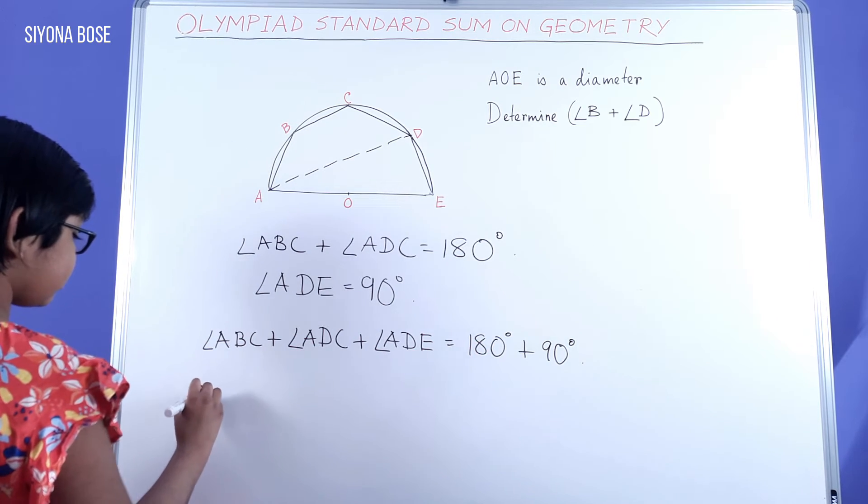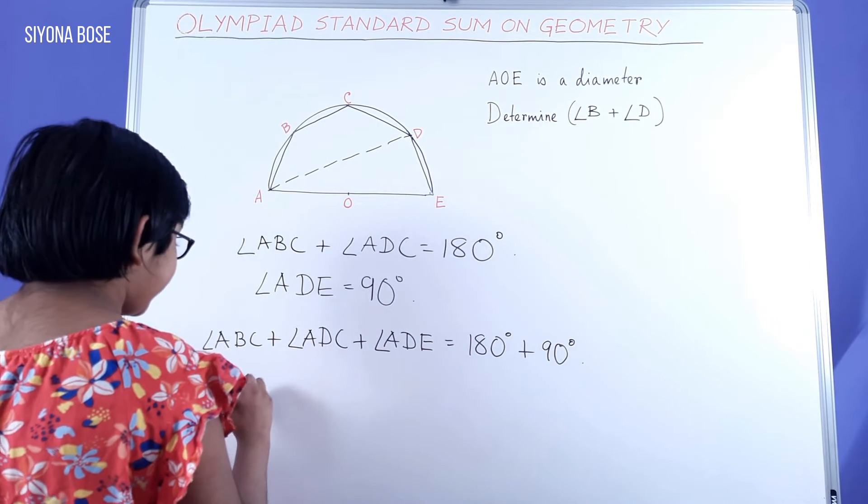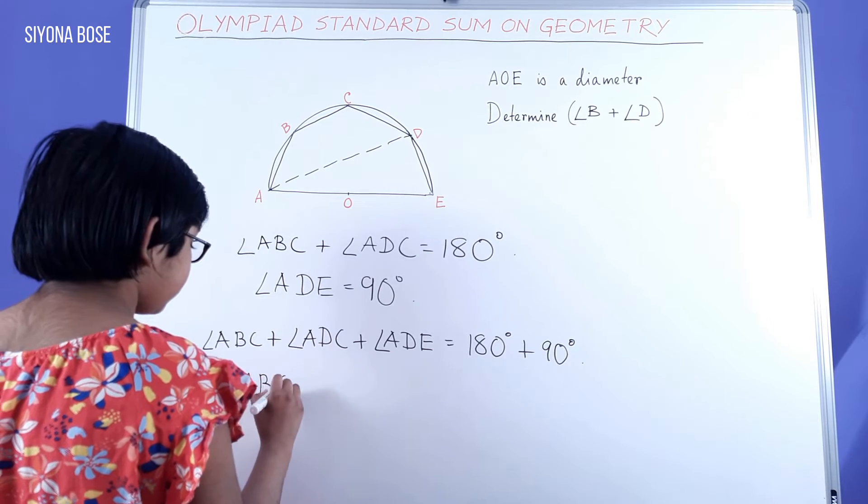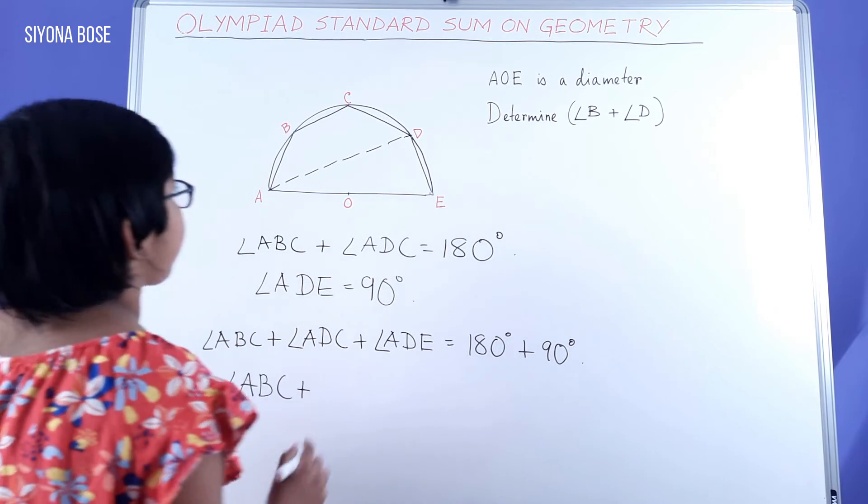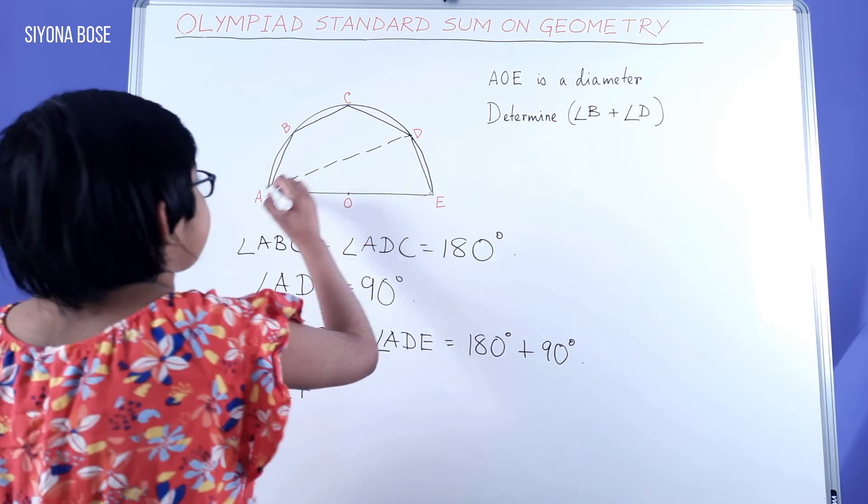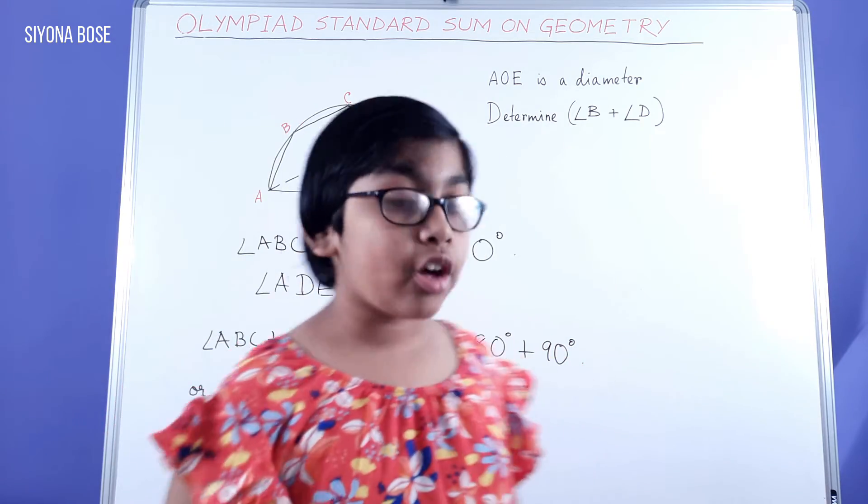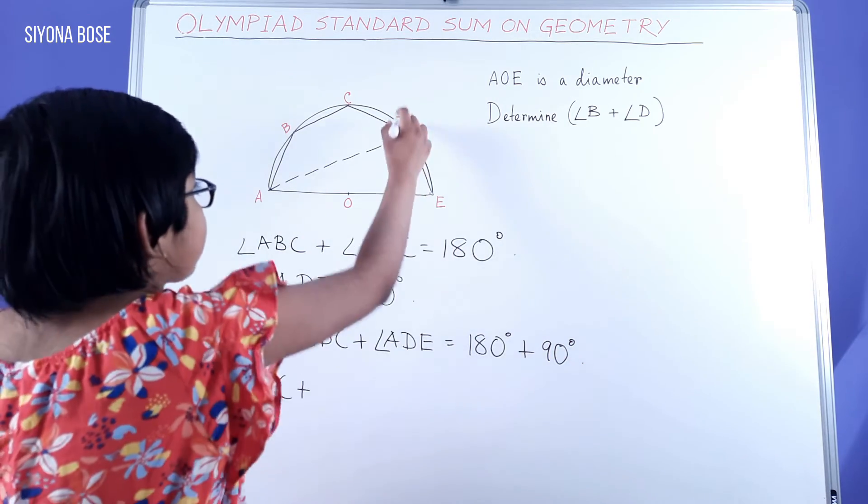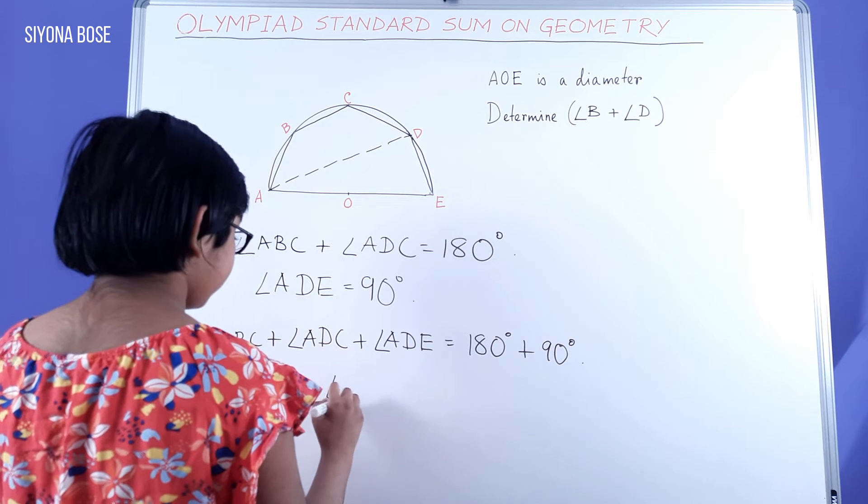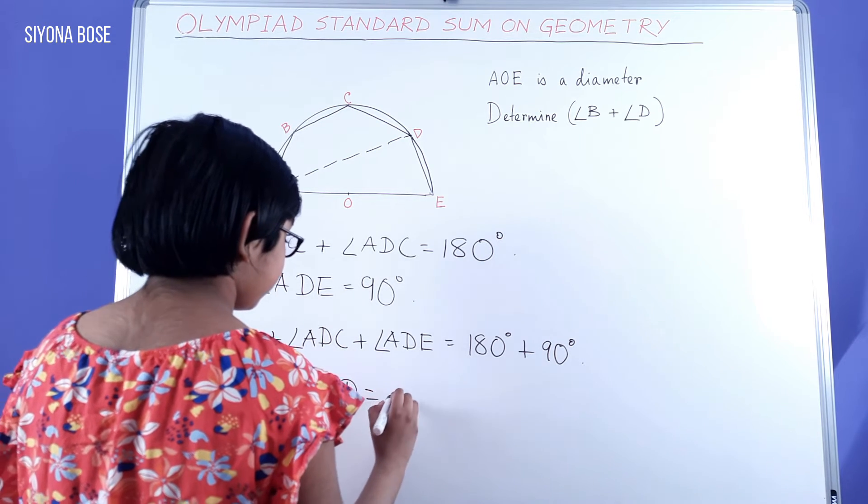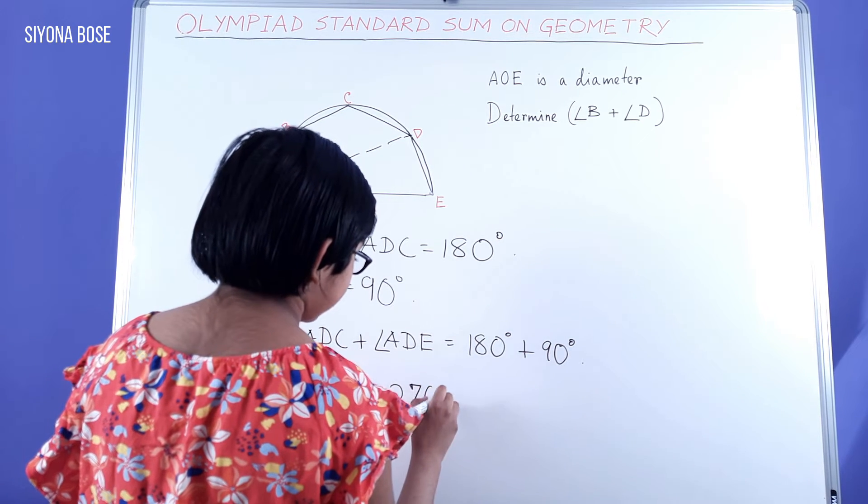Or, since angle ADC plus angle ADE together form the complete angle D, we get angle ABC plus angle D equals 270 degrees.